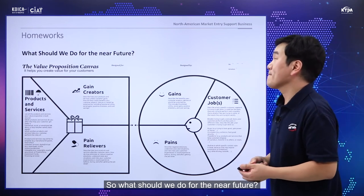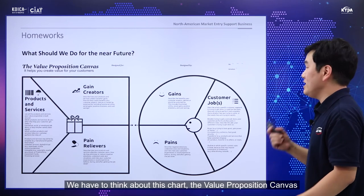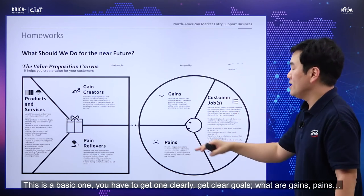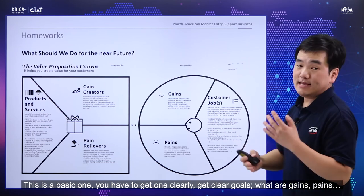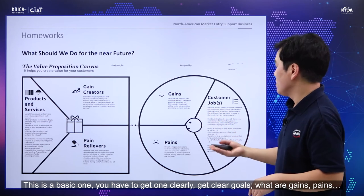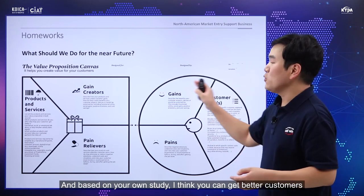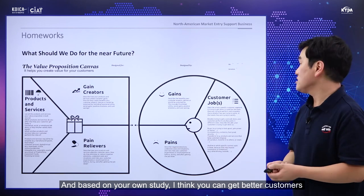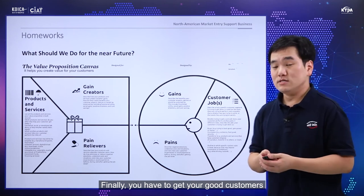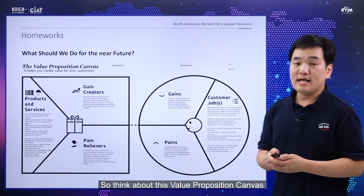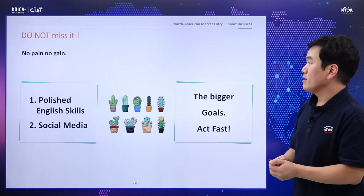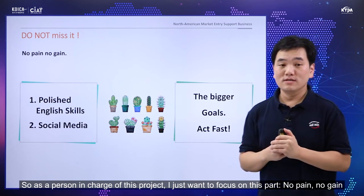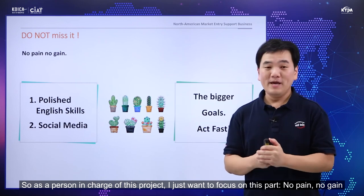What should we do in the near future? We have to think about the value proposition canvas — this is a basic one. You need to get clear on your goals: what is gain, what is pain? Based on your own study, you can better reach your customer. As a person in charge of this project, I want to focus on this — no pain, no gain. Searching for a good company in America is really hard because America is another level compared to our own countries.